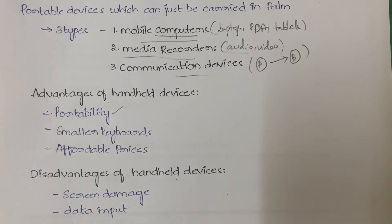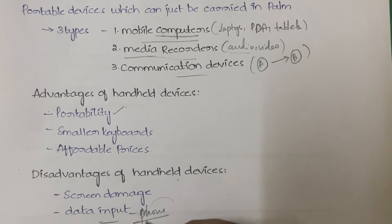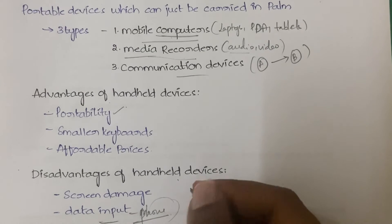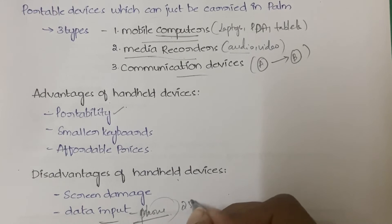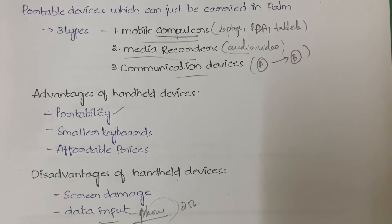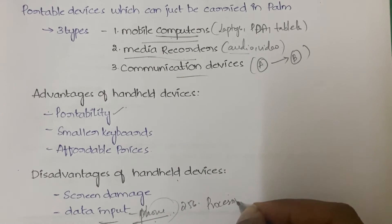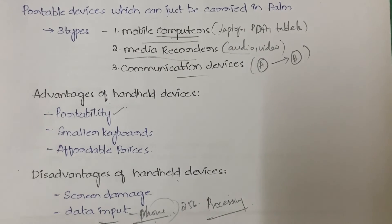The second disadvantage is data input and storage — you cannot store a very large amount of data on a mobile phone. Nowadays mobile phones come with 256 GB capacity, but laptops and desktops can still store much more. Additionally, the processing speed is somewhat slow compared to PCs.